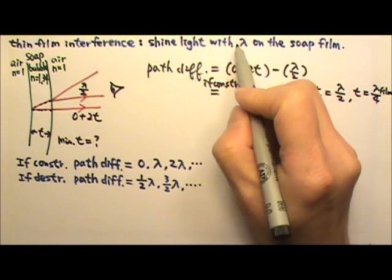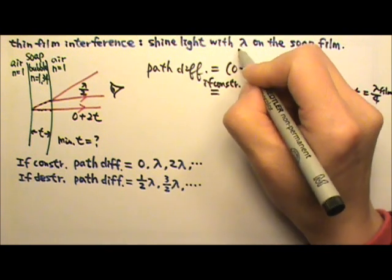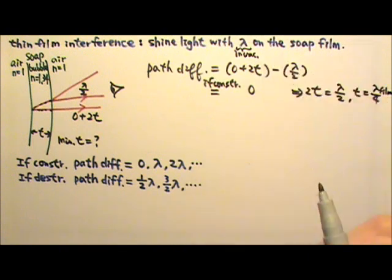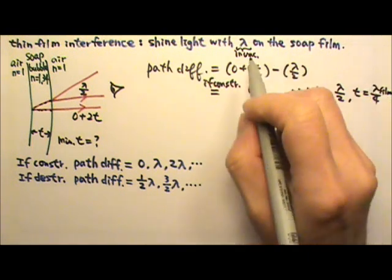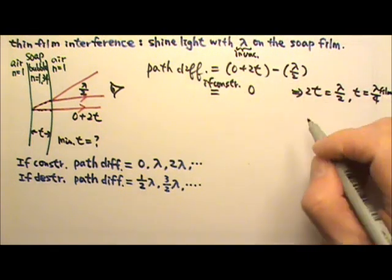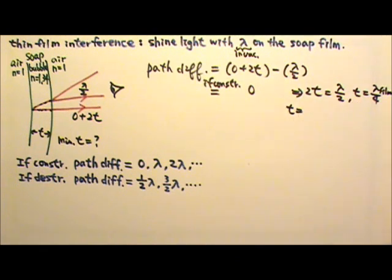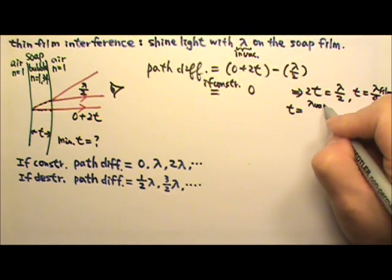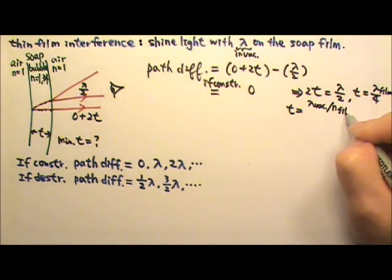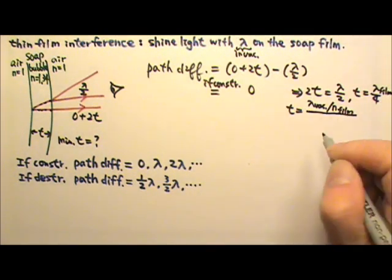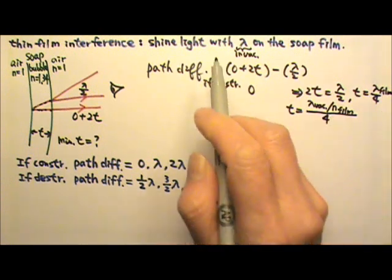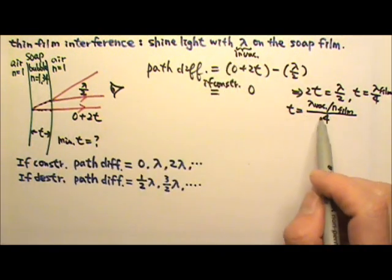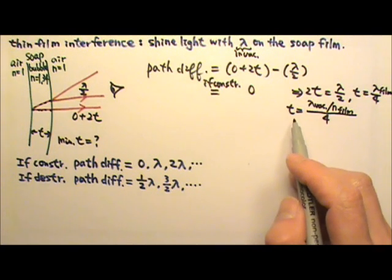When a wavelength is given in the problem, it is the wavelength in vacuum. We have to convert it to the wavelength in the thin film. So the thickness equals the wavelength in vacuum divided by the N of the thin film, all divided by 4. In this case, divide the wavelength by 1.34 and then divide by 4 to get that minimum thickness.